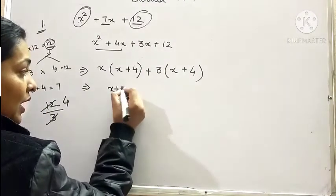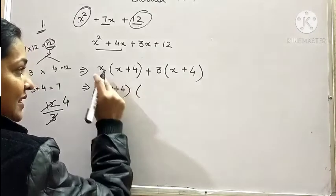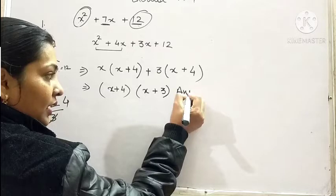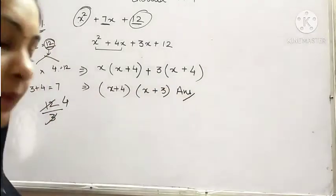So take out x plus 4 as common. What is left? x plus 3. This is your answer. I repeat the method.